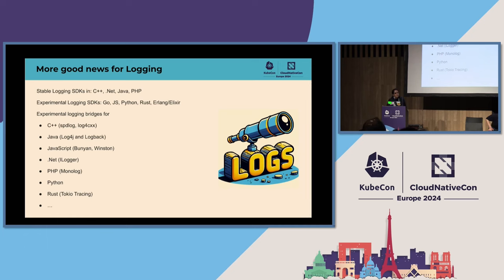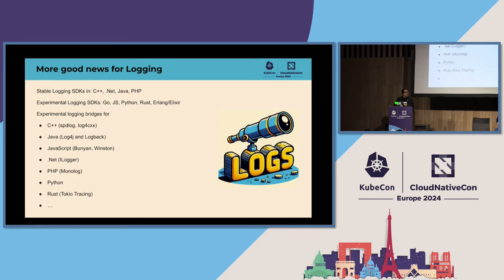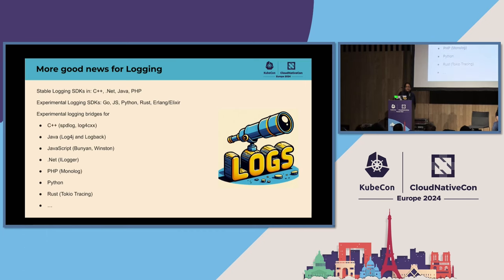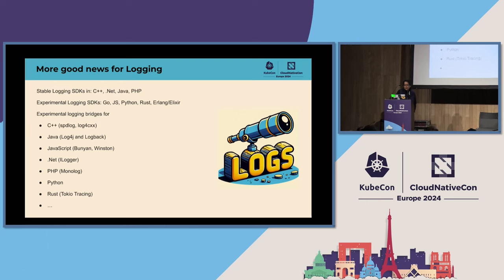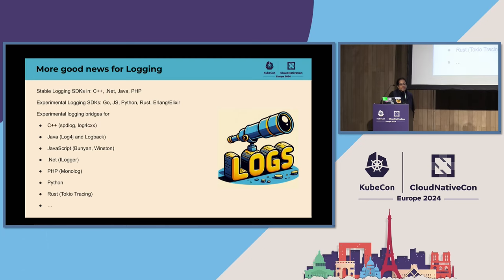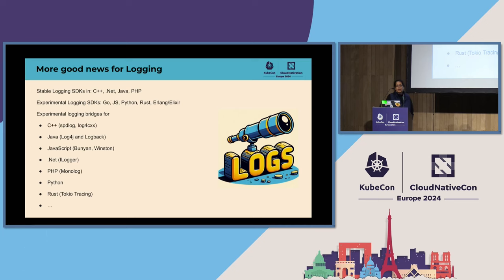We're going to cover different areas of work ongoing in the project. This is about logging. As most of you know, logging has been stable — it was declared when OpenTelemetry went GA in November at the previous KubeCon in Chicago. Logging SDKs were already starting to get stable. C++ and .NET went first, and then Java and PHP are also done.